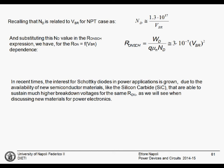It must be said that in recent times, the interest in Schottky diodes in power applications is growing. This is due to the availability of new semiconductor materials — like silicon carbide, which we will study in a future lecture — that are able to sustain much higher voltages for the same on-state resistance. Moving to silicon carbide or other wide bandgap materials extends the application range for the Schottky diode.